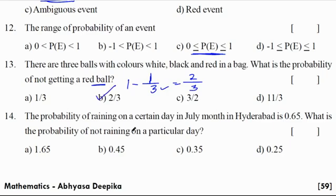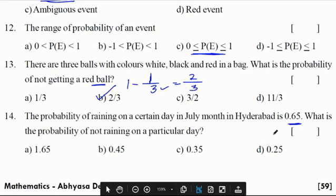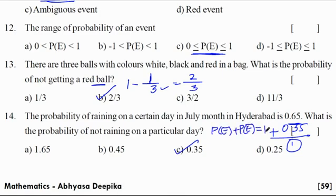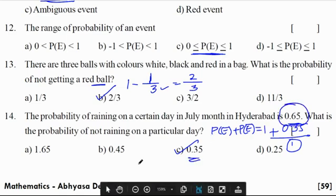The probability of raining on a certain day in July in Hyderabad is 0.65. What is the probability of not raining on a particular day? The answer is C, 0.35. Because as we discussed in the first problem, probability of event plus probability of not event equals 1. So 1 - 0.65 = 0.35. Thank you students. If this video is helpful, please give a like.